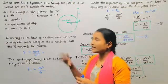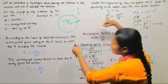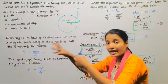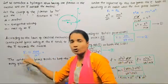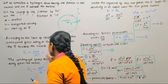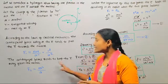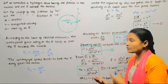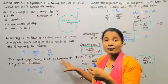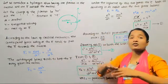The centripetal force is acting on the electron and pulls the electron towards the nucleus. The centrifugal force tends to keep the electrons away from the nucleus — it acts to push the electron away from the nucleus.